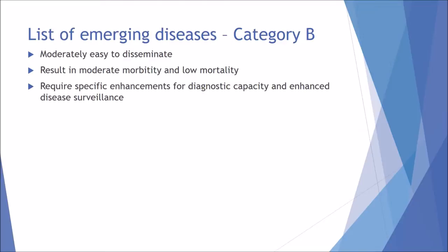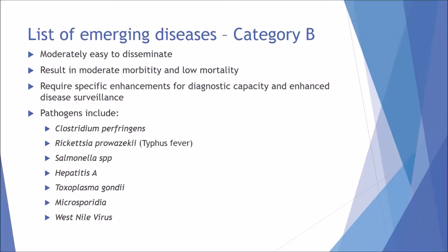Category B pathogens are moderately easy to disseminate with moderate morbidity and low mortality, so there is a fairly high rate of them but they are not nearly as fatal. They still require specific enhancements for diagnostic capacity and enhanced disease surveillance. Examples include Clostridium perfringens, the bacterium for typhus fever, Salmonella, Hepatitis A, Toxoplasma gondii, Microsporidia, and the West Nile virus.